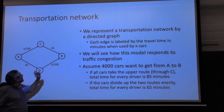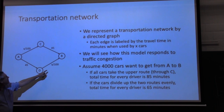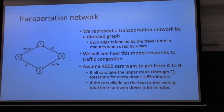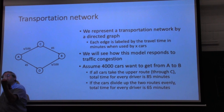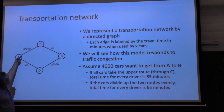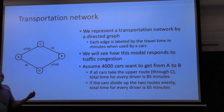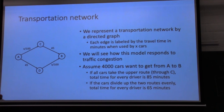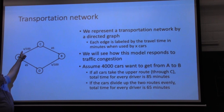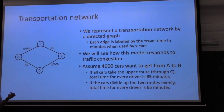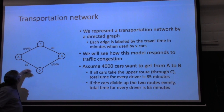Assume you have 4,000 cars that want to go from A to B. Each car has a strategy — it can go one way or the other. If they all go on the upper route, the time will be 4,000 divided by 100, which is 40, plus 45: 85 minutes. But if they divide evenly — 2,000 go this way, 2,000 go that way — then it takes 2,000 over 100 plus 45, which is 65 minutes. So dividing evenly saves 20 minutes.